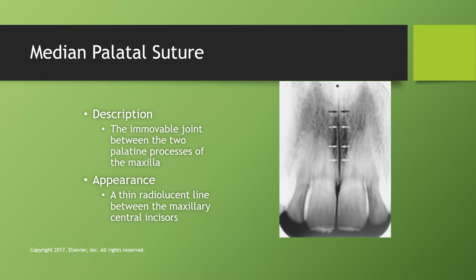The palatine processes form the major portion of the hard palate, and this is where the two halves join together in the center. The soft tissue structure associated with this is the median palatal ridge. The median palatal suture extends from the alveolar bone between the maxillary central incisors all the way to the posterior hard palate.